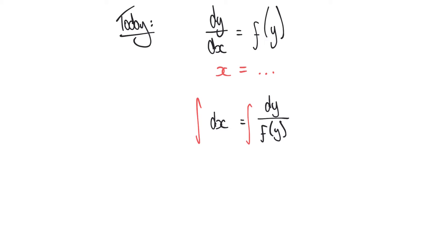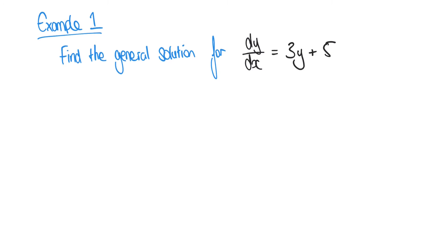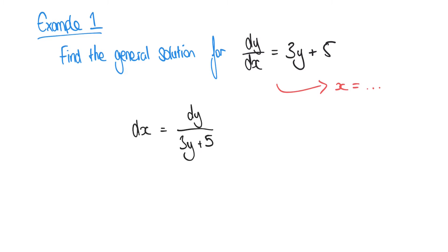This might not make too much sense as it stands, but we're going to go through two examples where it'll be a bit clearer when we put this into practice. Here's our first example, where we have the expression dy/dx equals 3y plus 5. The objective is to solve this equation so that it's in the form of x equals. Since the right-hand side is a function of y, we rearrange to get dx equals dy over (3y + 5), and then integrate both sides.